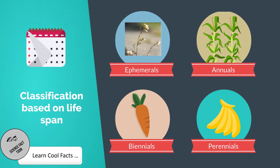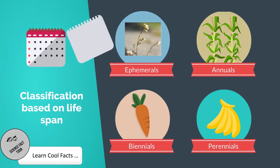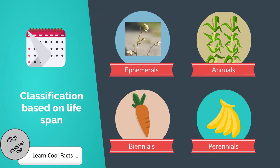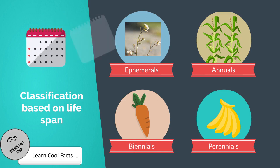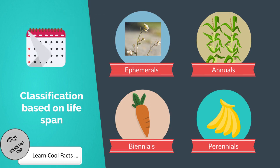3. Biennials: These plants have a life cycle span of two years. In the first year, they develop root system and the stem develops, and leaves start growing. In the second year, the development of flowers and fruits takes place. Examples: spinach, carrots, onions.